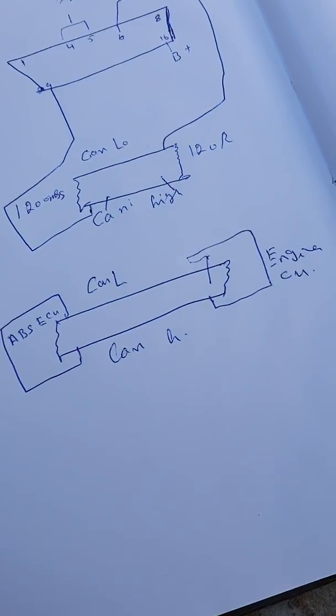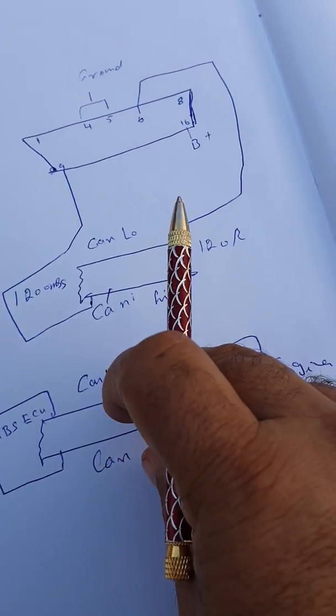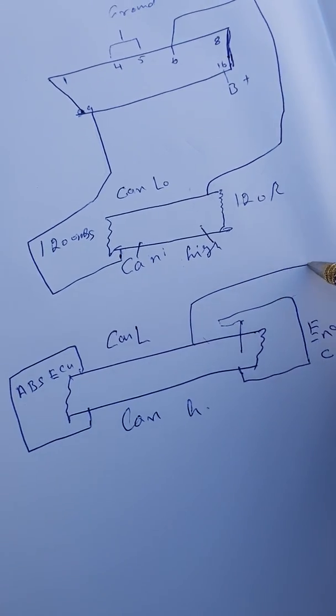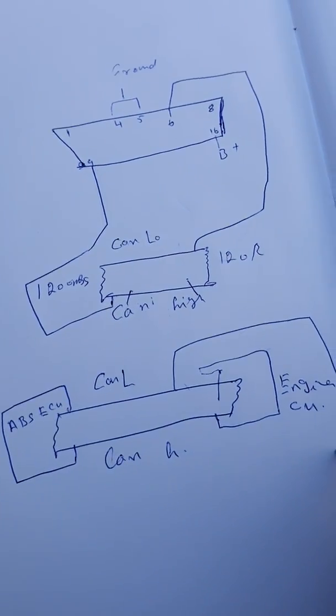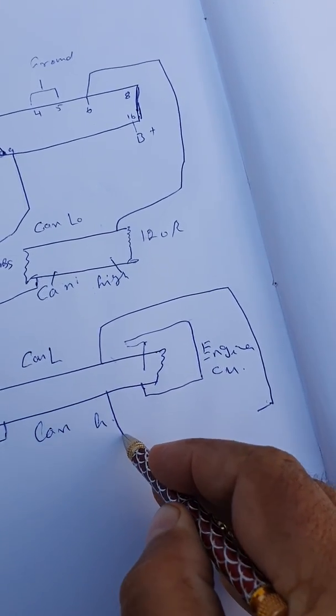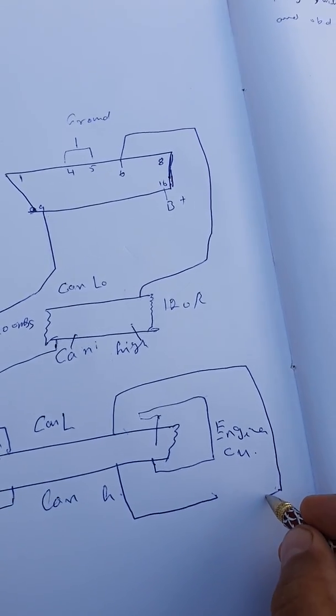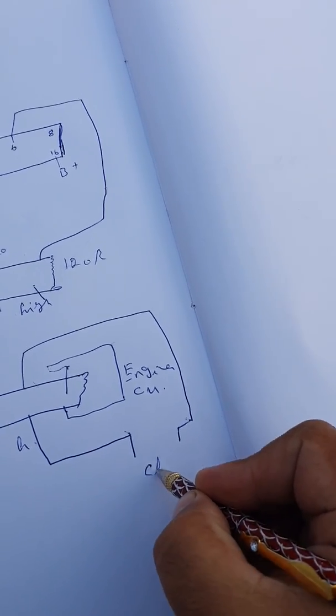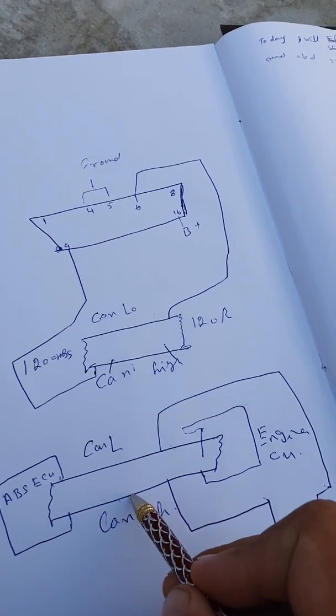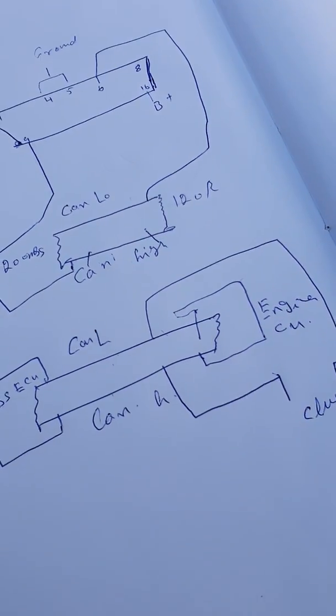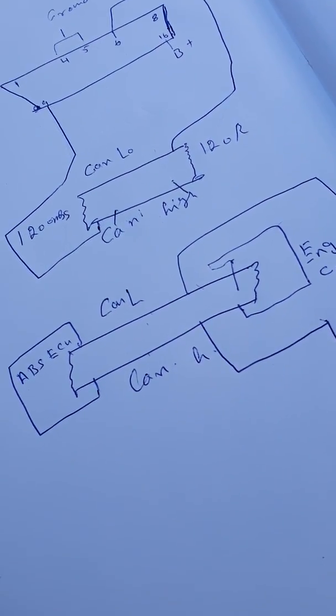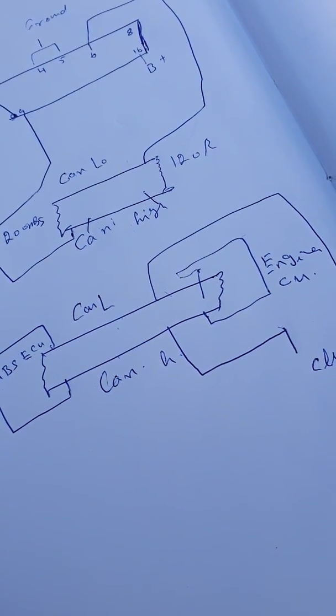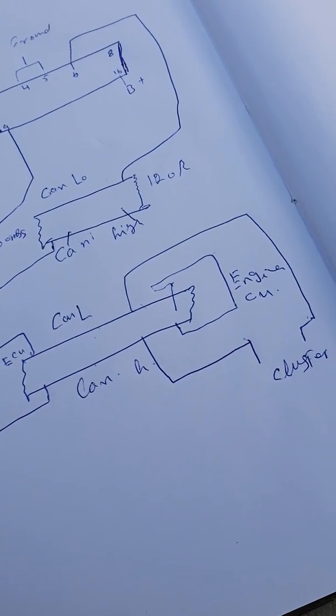How many computers, how many ECUs connect with these two wires? For example, here's the cluster. How many computers can you connect to these two wires? ABS, cluster, four wheel ECU. Some new model cars have 50 to 60 ECUs inside the car.